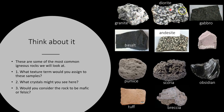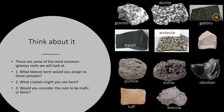Granite, diorite, and gabbro are all coarse-grained igneous rocks that come from plutons. In the gabbro photograph, you can see grains present — all very dark in color — indicating lots of magnesium and iron. Gabbro is the mafic coarse-grained end point of these three. So: granite is felsic, diorite is intermediate, and gabbro is mafic.